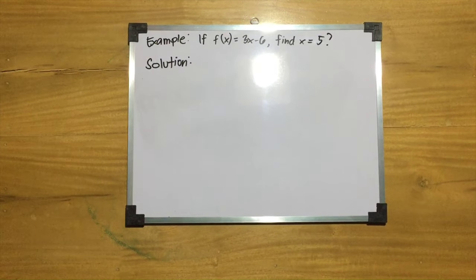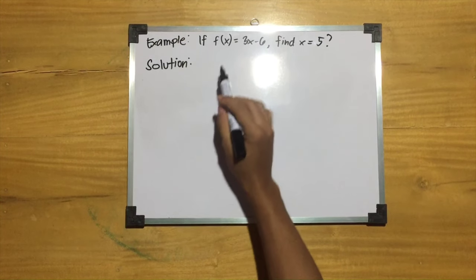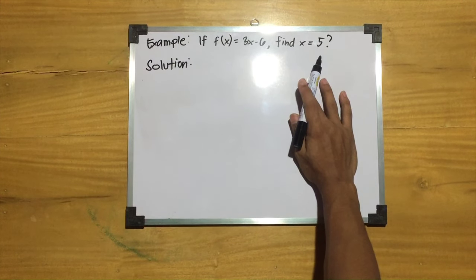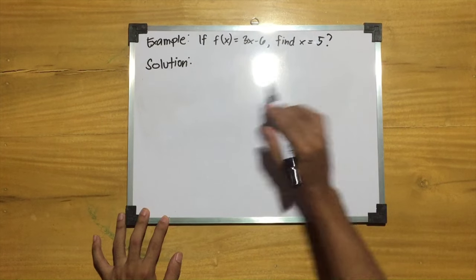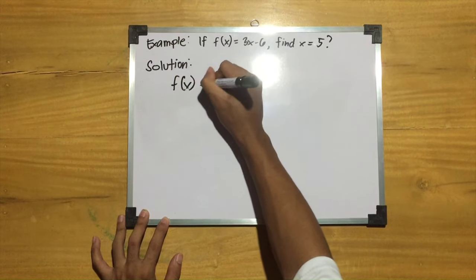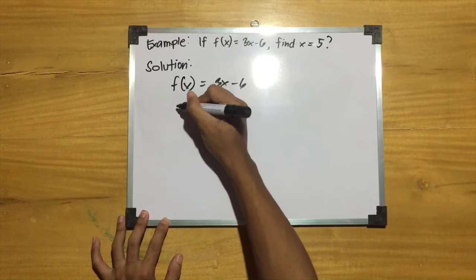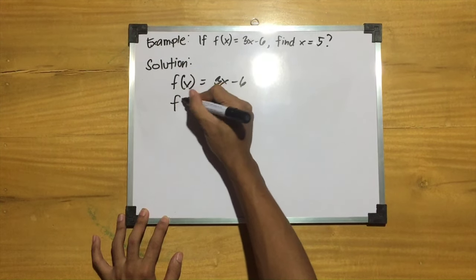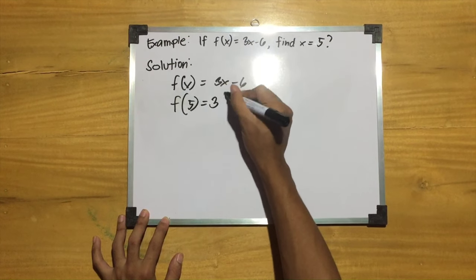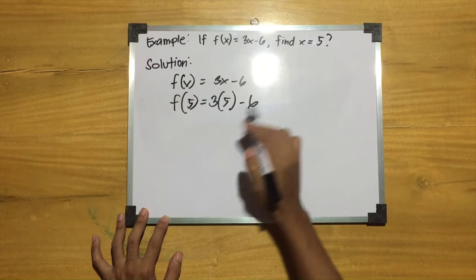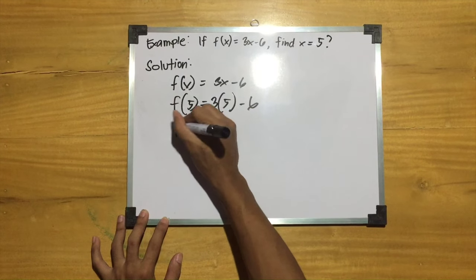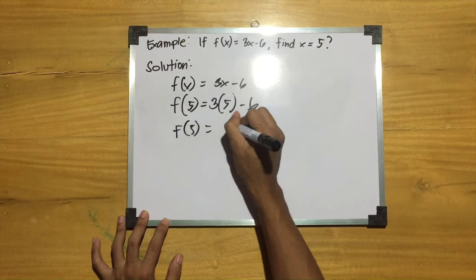For example, if f of x equals 3x minus 6, find f(5). First, we copy the function f of x equals 3x minus 6, then substitute x equals 5. So f(5) equals 3 times 5 minus 6, which equals 15 minus 6 equals 9. Therefore, f(5) equals 9. And that's how you get the value of a function.